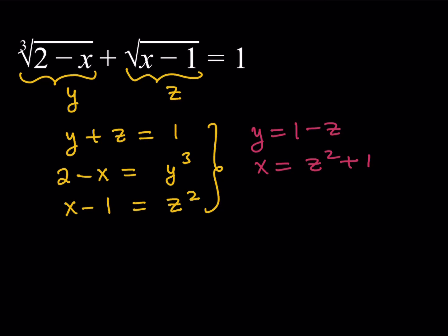So now, with those two things, I can just go ahead and use the second equation and then substitute those. For example, I can replace the x with z squared plus 1. So it's going to look like this: 2 minus the quantity z squared plus 1. And on the right-hand side, I have y cubed, which can be written as 1 minus z quantity cubed. Great.